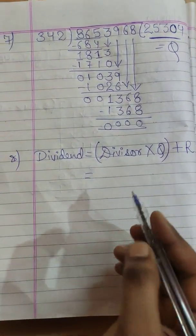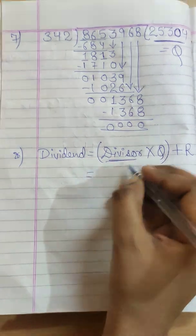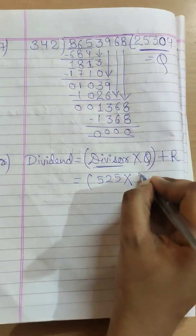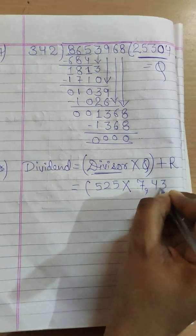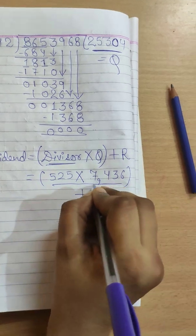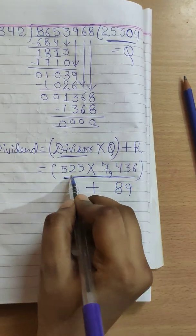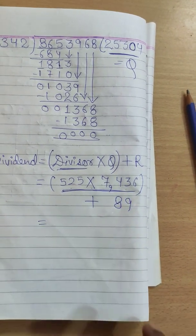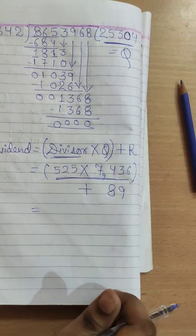So here is our formula. Now from the book we can write here divisor is 525 multiply with the quotient 7,436 plus our remainder is 89. So first we need to solve these two. This number needs to be multiplied with this number. So solve it in your rough work and write its answer.